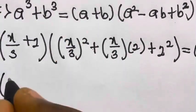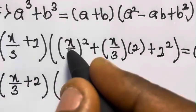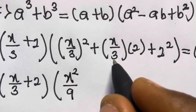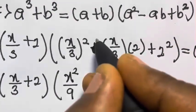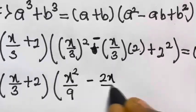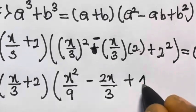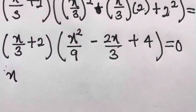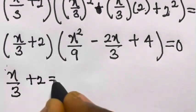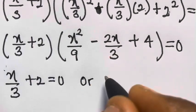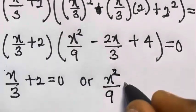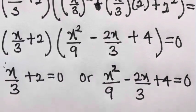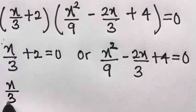Applying this, we have x divided by 3 plus 2, multiplied by x divided by 3 squared minus x divided by 3 times 2 plus 2 squared, equals 0. That gives us x divided by 3 plus 2, multiplied by x squared divided by 9, minus 2x divided by 3 plus 4, equals 0.